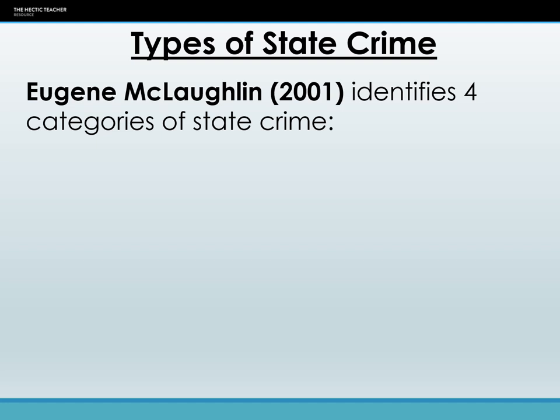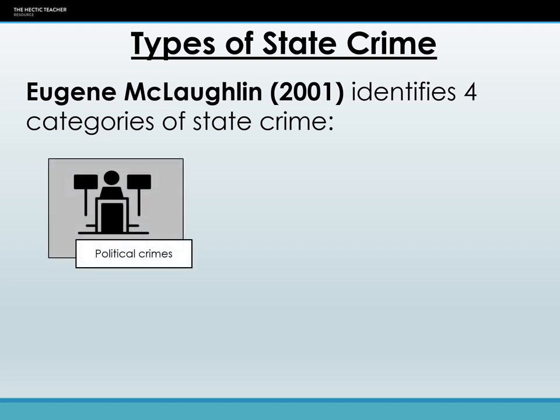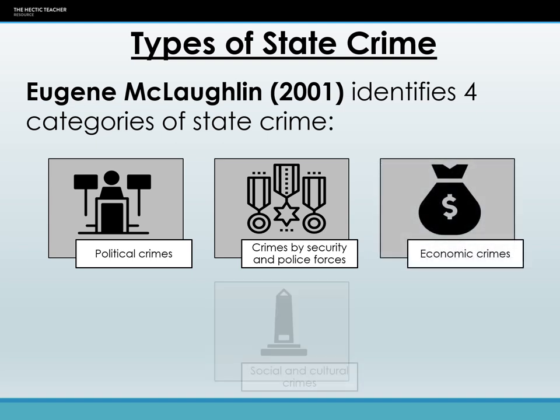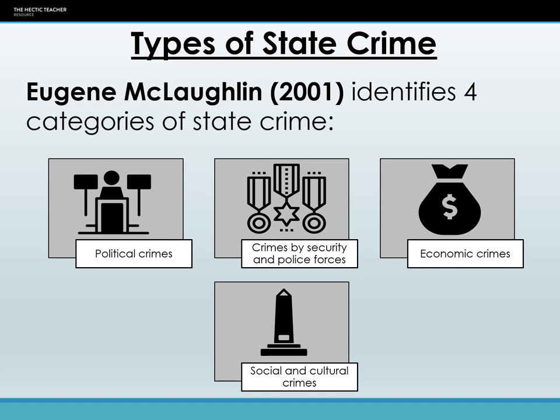This is the work of Eugene McLaughlin, who grouped different forms of state crime into four categories: political crimes, crimes by security and police forces, economic crimes, and social and cultural crimes. By using these categories, we can see whether countries are engaging in criminal activity that encompasses all four or five of the definitions we've discussed.